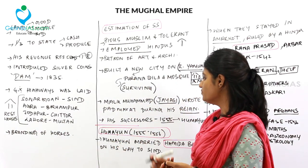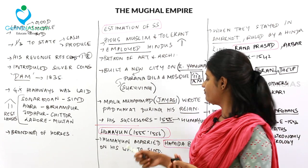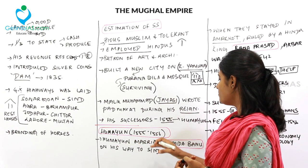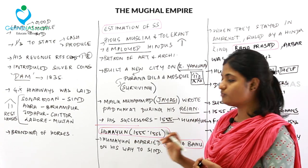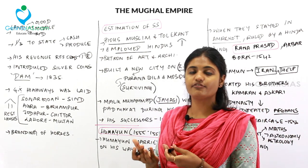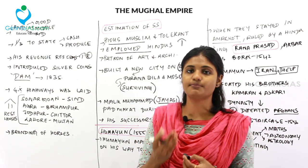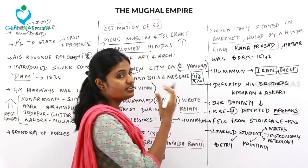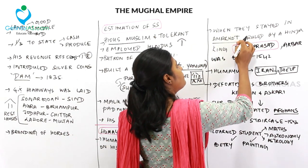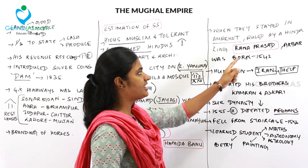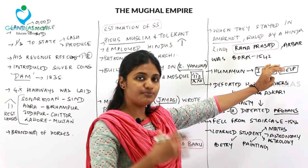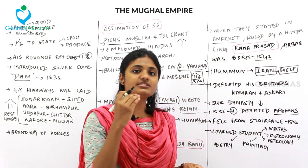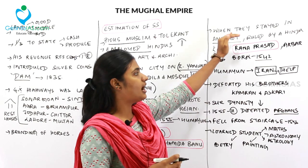Humayun ruled again from 1555 to 1556 — only six months. During his exile, while moving to Sindh, he married Hamida Banu Begum, and they stayed in Amarkot under the Hindu king Rana Prasad. His son Akbar was born in Amarkot in 1542. Humayun later went to Iran and sought help from rulers there.